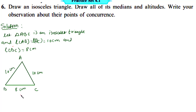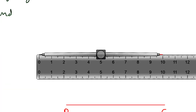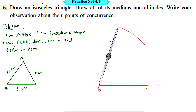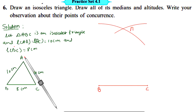Let us first draw the isosceles triangle with the given measurements. With the help of a ruler, draw segment BC of the given length and name it BC. Take 10cm distance in the compass with the help of a ruler and put the compass on point B, and draw an arc above the side BC. Keeping the same distance, put the compass on point C and draw the arc intersecting the first arc. This intersection point is point A. With the help of a ruler, join point A to B and point A to C with segments. This is our required isosceles triangle ABC.